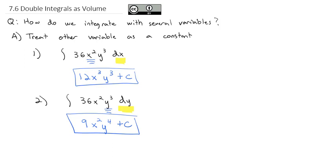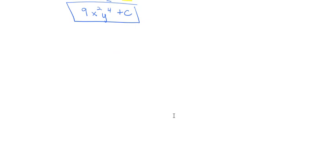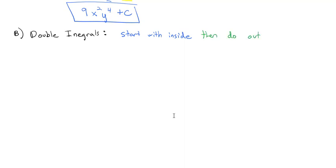This is the process we take as we integrate with several variables — treat the other variable as a constant. When integrating with several variables, we actually integrate both dx and dy using what are called double integrals. With double integrals, like parentheses, we start with the inside integral and then do the outside integral. It may help to color-code what you're doing — inner integral in one color and outer integral in another.